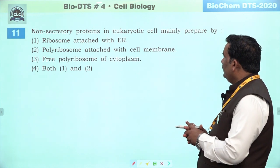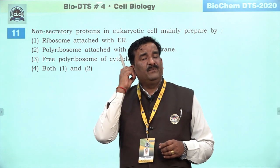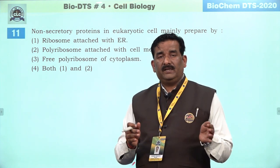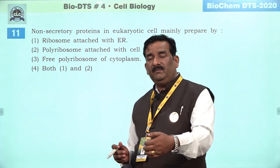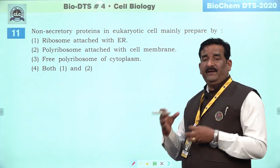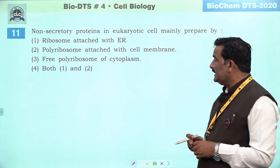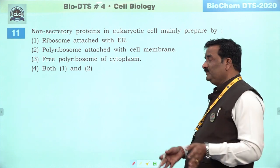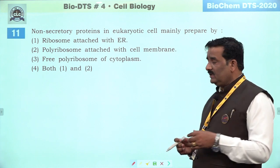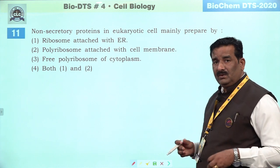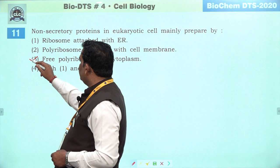Next question: non-secretory proteins in eukaryotic cell mainly prepared by. Yeh achha logically question hai — NCRT based. Kyunki jo secretary proteins hote hain, woh actually endomembrane system ke through bante hain. RER unhein prepare karti hai, Golgi body mein unko packing aur modification ki jaati hai, aur vesicle ke through exocytosis ke liye unhein bheja jaata hai. Jabki jo non-secretary hain, jo cell mein use hone waale hain, woh free polyribosome cytoplasm mein bana sakte hain. Third is the right answer.